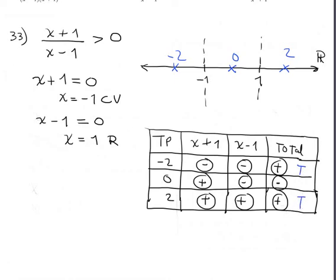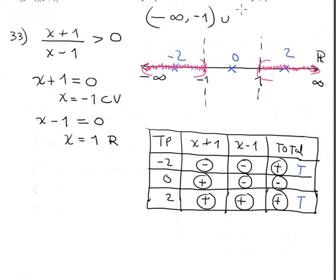When you examine this, it's a strict inequality so it does not contain the endpoints. The solution is the interval from negative infinity to negative one, union one to infinity. In set notation: x less than negative one or x greater than one.